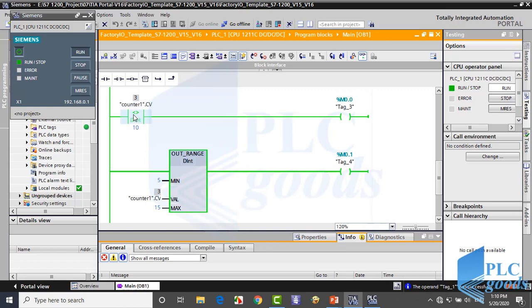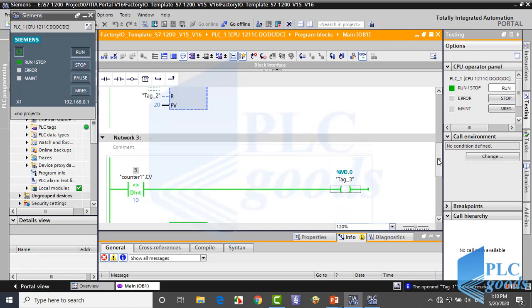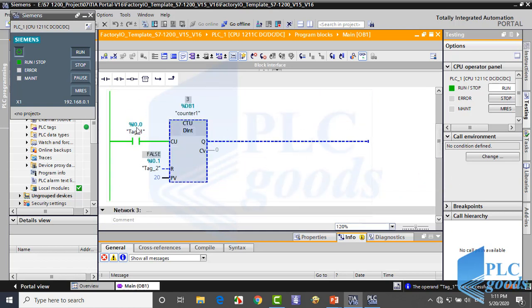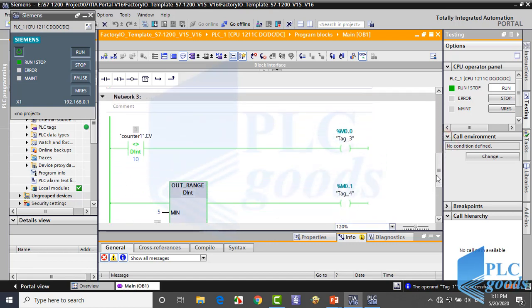Now the counter value is 3, which is not equal to 10, so this output is on. Also, 3 is out of range 5 to 15, so the second output is on. Now I can change the current value to see how these comparators work. You may want to pause this video and try to test and learn comparator instructions.